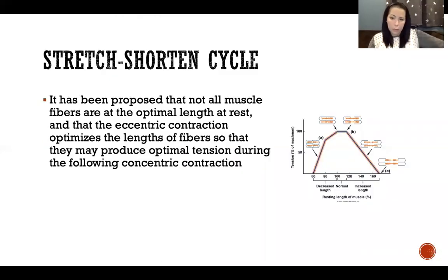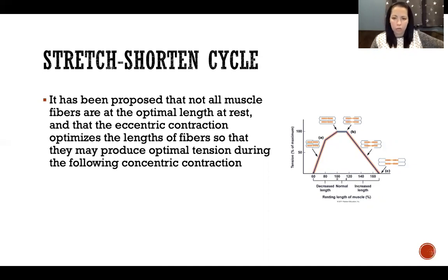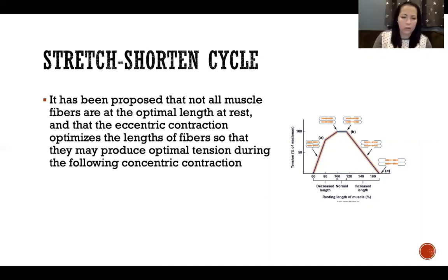It's also been proposed that not all muscle fibers are at their optimal length when at rest, and that the eccentric contraction during a stretch-shorten cycle might actually stretch the fibers and put the sarcomeres in their most optimal position so that they're able to produce the greatest amount of force when you shift into the concentric contraction. This is where the length-tension relationship comes in. At rest, sarcomeres might be a little more shortened than optimal for force production, but if we go into an eccentric contraction first, we're in a more favorable position that allows greater force production in the concentric contraction.